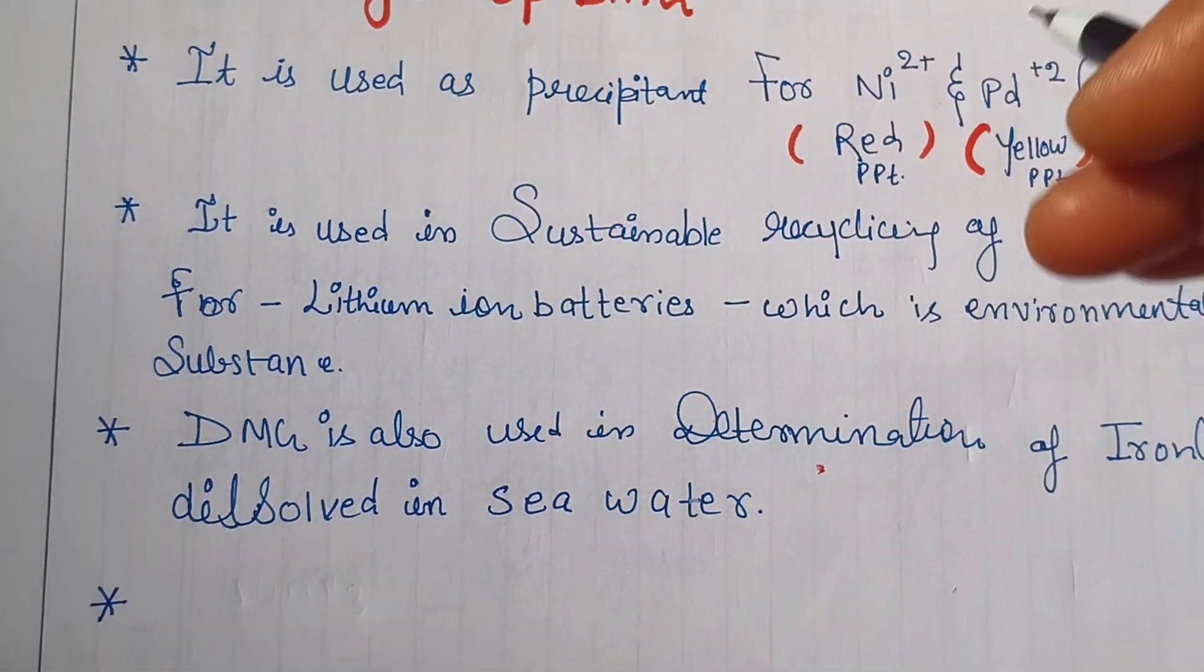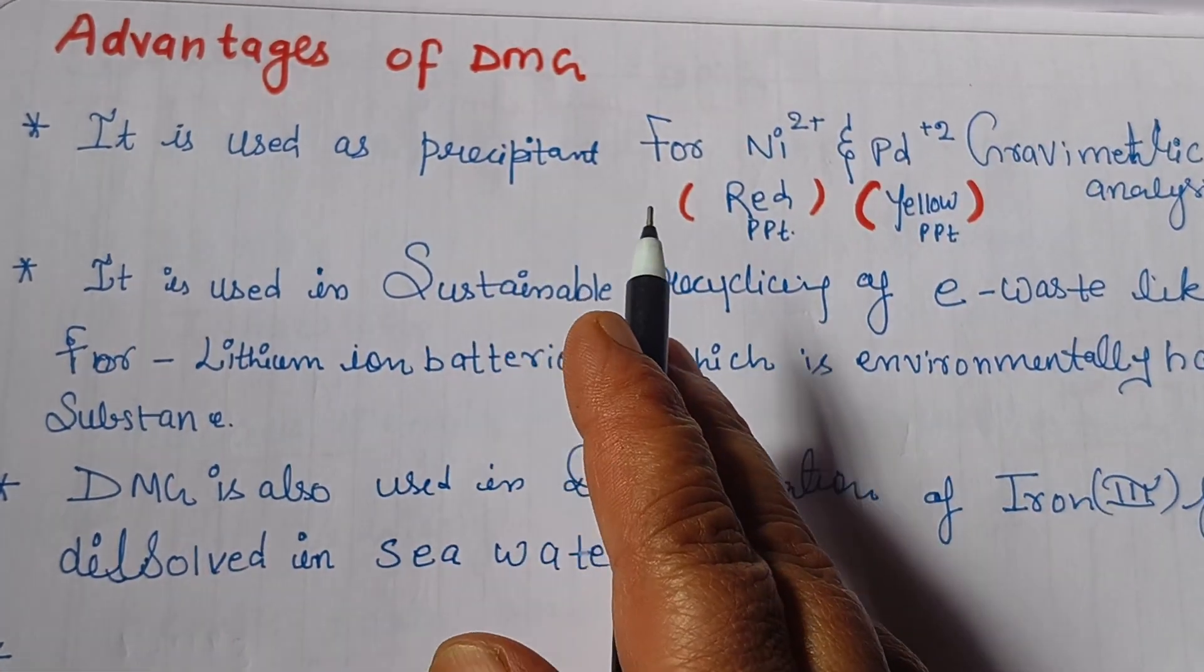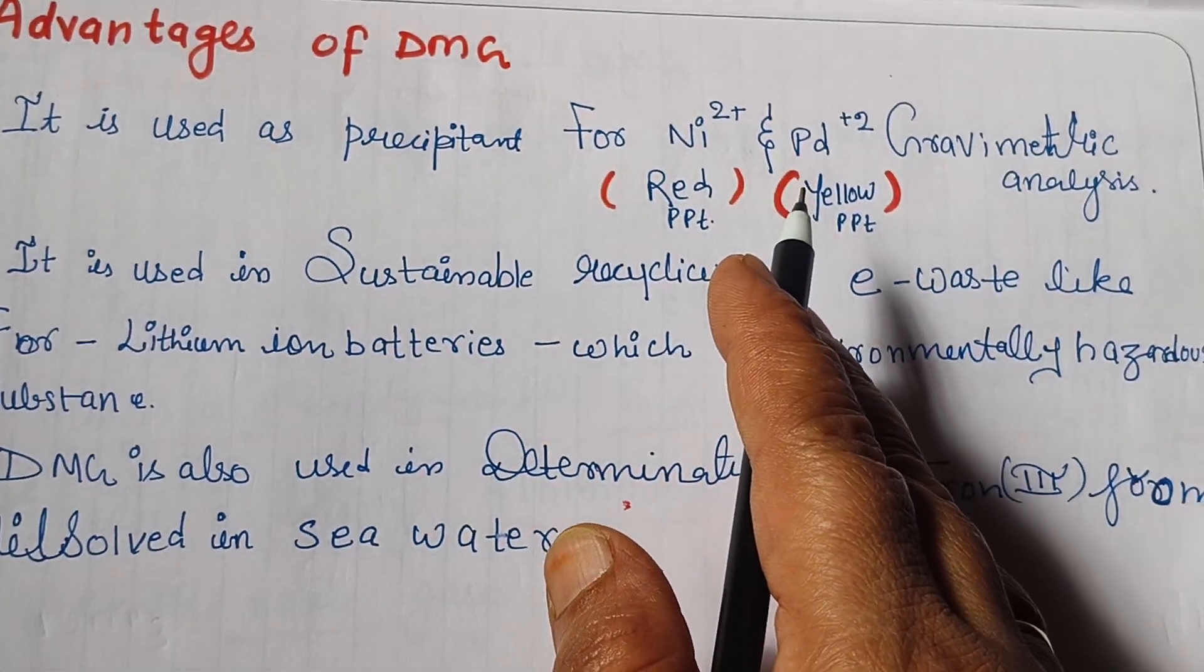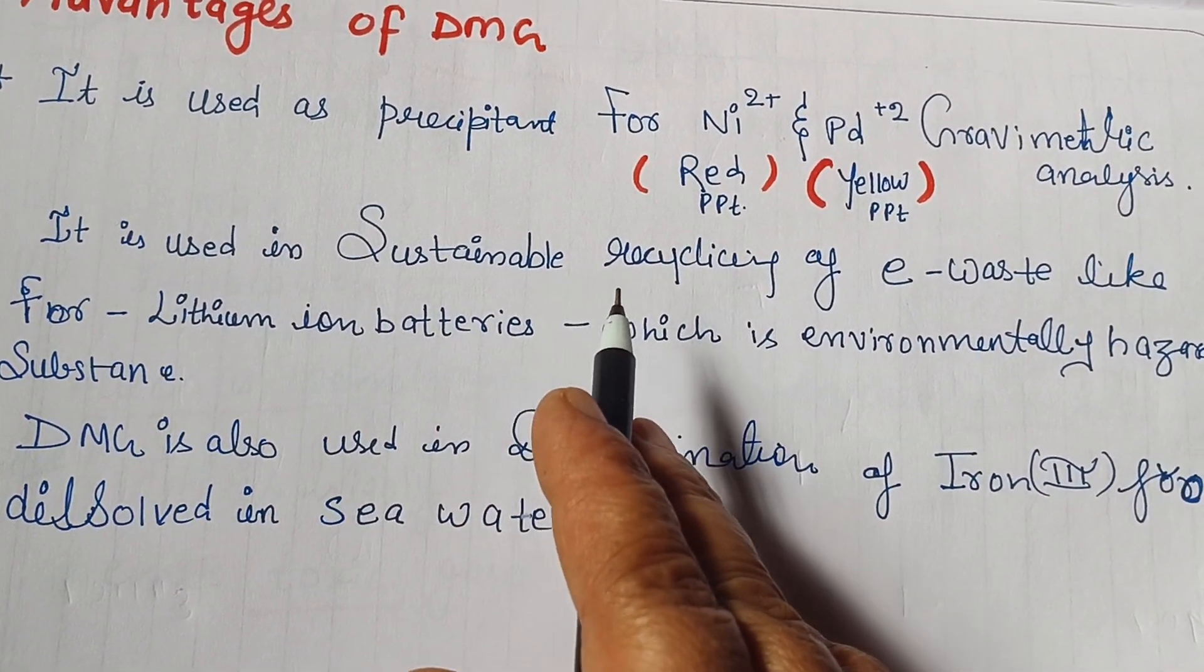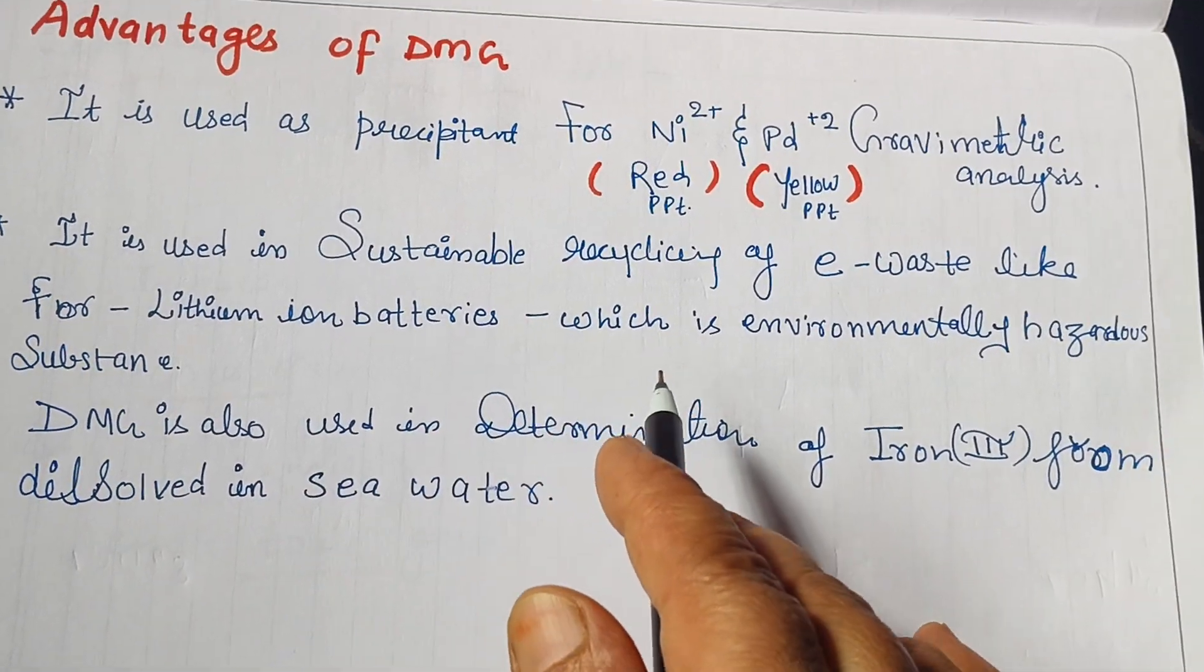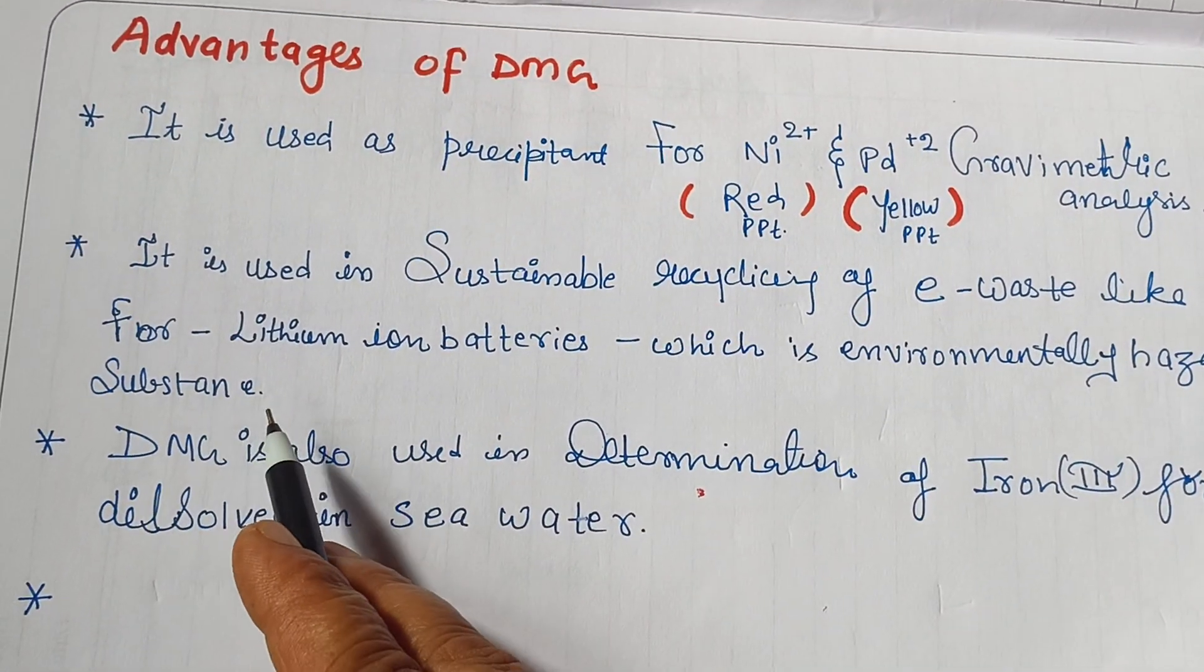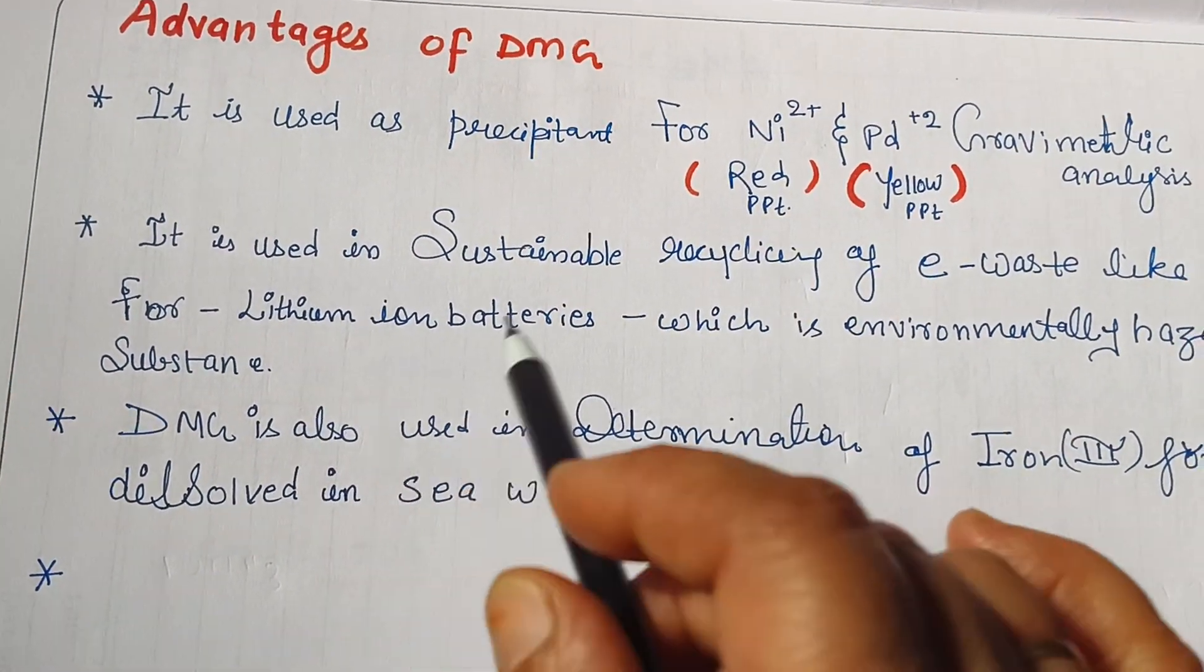Other advantages of DMG - it is used as a precipitant for nickel and palladium in gravimetric analysis. It is used in sustainable recycling of e-waste like lithium ion batteries, which are environmentally hazardous substances. Since it can form complexes with metals, it is used for recycling of e-waste.